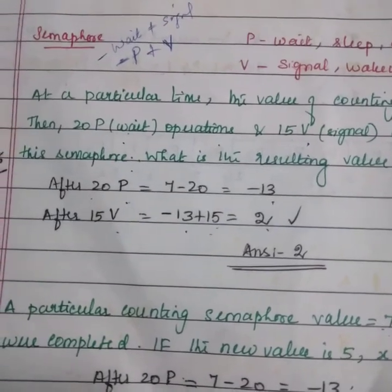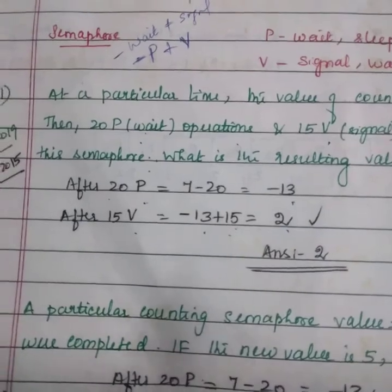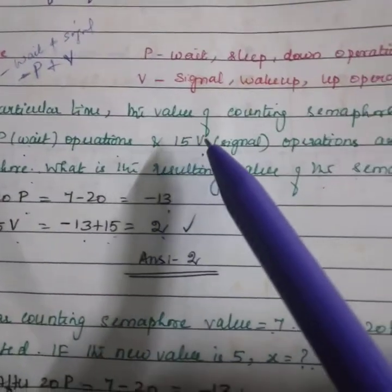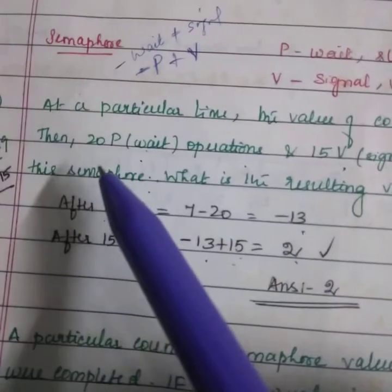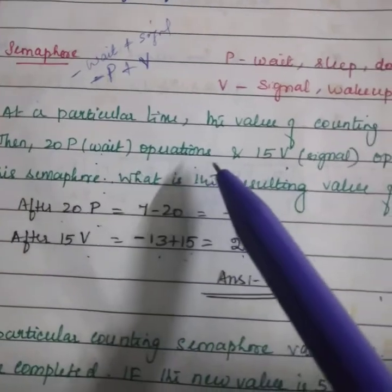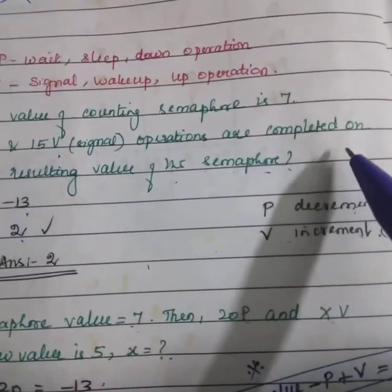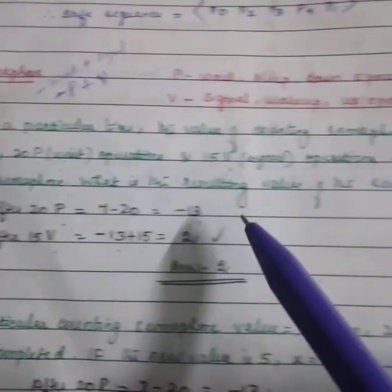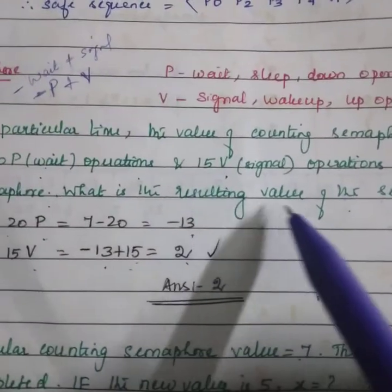Now we will be seeing two problems. Problem number 1: At a particular time, the value of counting semaphore is 7. Then 20P wait operations and 15V signal operations are completed on this semaphore. What is the resulting value of the semaphore?